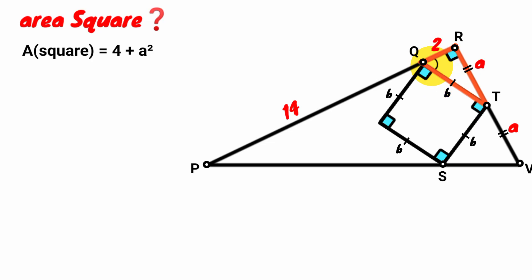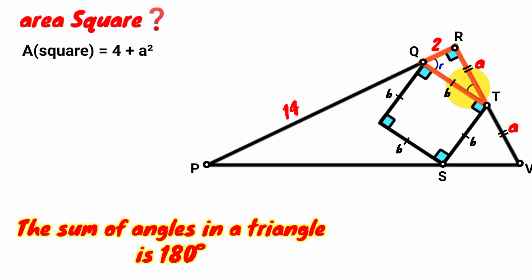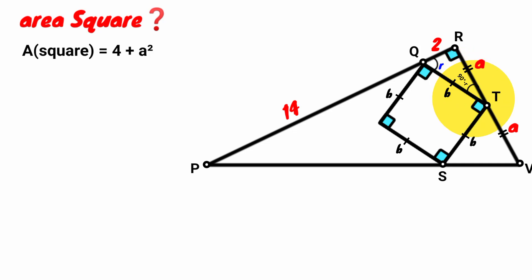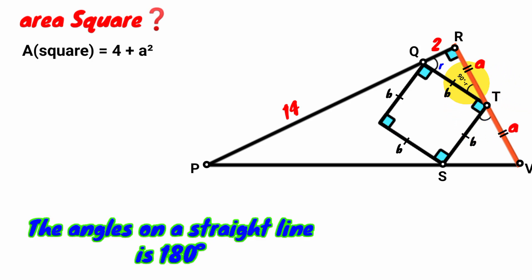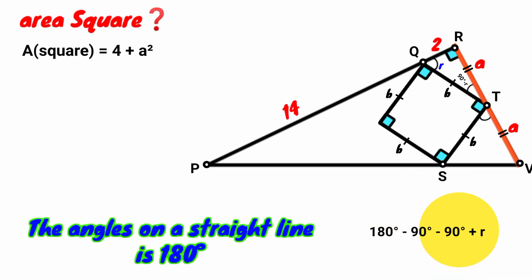We assume the size of angle RQT to be R. This triangle is a right angle triangle and one of its angles is R. Based on the rule that the sum of angles in a triangle is 180 degrees, this angle here must be 180 minus 90 minus R, which equals 90 degrees minus R. Looking at the straight line, this angle (90 minus R), this right angle (90 degrees), and this angle all lie on the same straight line. Since angles on a straight line sum to 180 degrees, this angle must be 180 minus 90 minus (90 minus R), which simplifies to R.